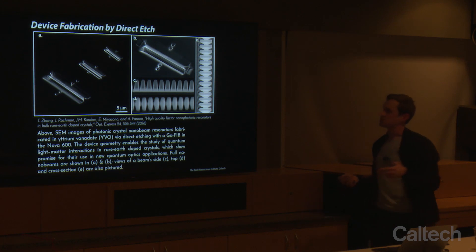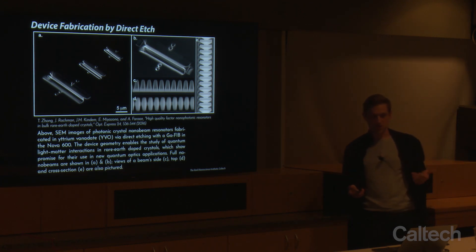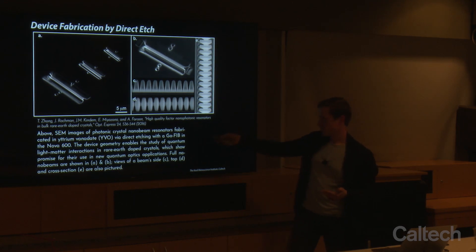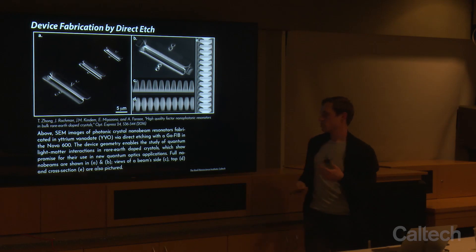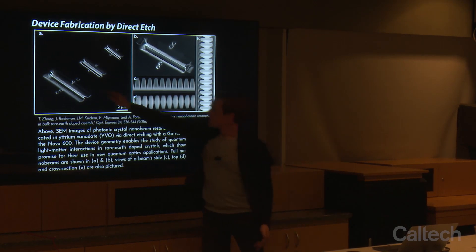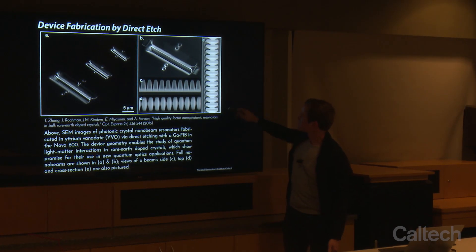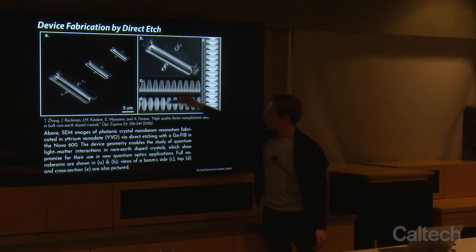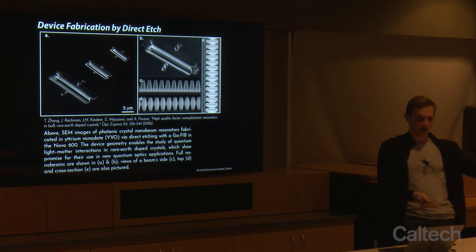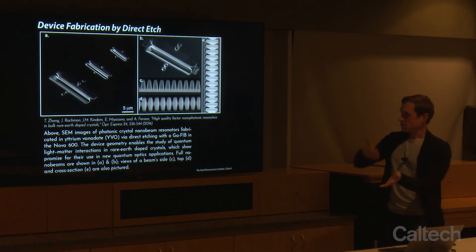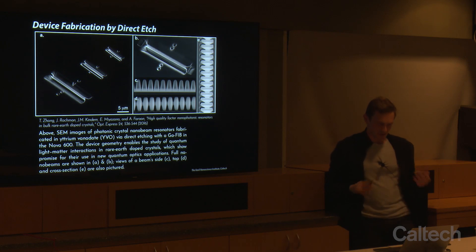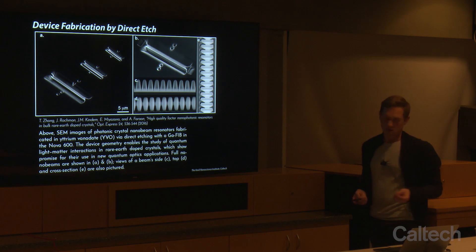This is a really nice example of direct device fabrication using solely a gallium-focused ion beam, from the Faraon group here at Caltech. They're making nano beam resonators out of yttrium vanadate, used for quantum optics and quantum memory systems. They form a beam at three different sizes — viewable from above, from the side, and in tilted view. This takes a number of steps: you cut from one angle on one side and a different angle on the other side to undercut the beam, then pattern directly with periodicity over the top. It takes a lot of work but can be done reproducibly and effectively.